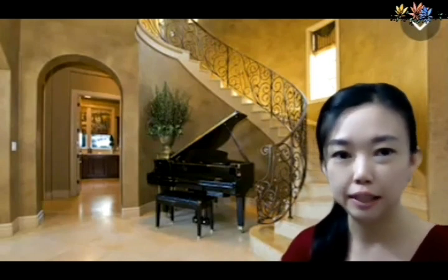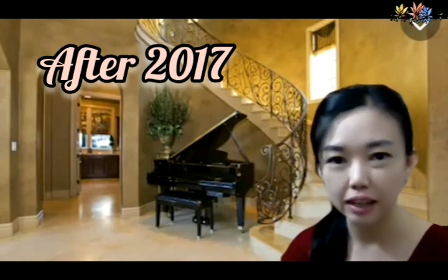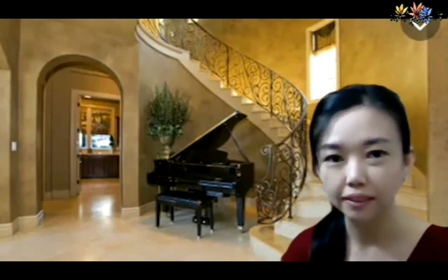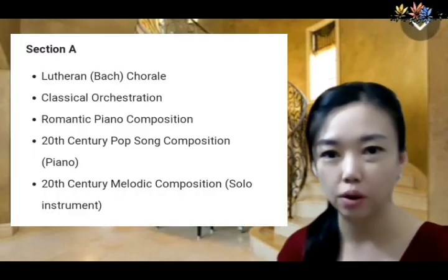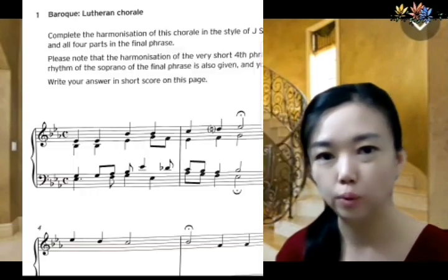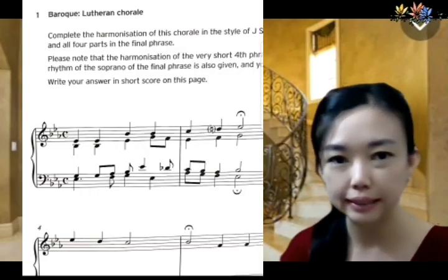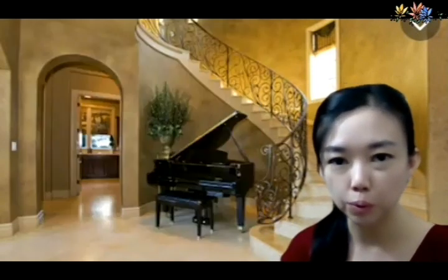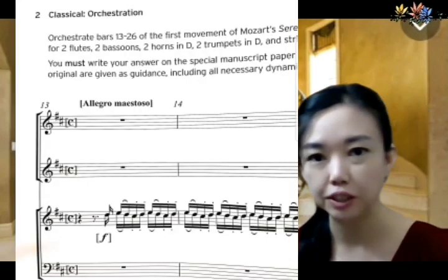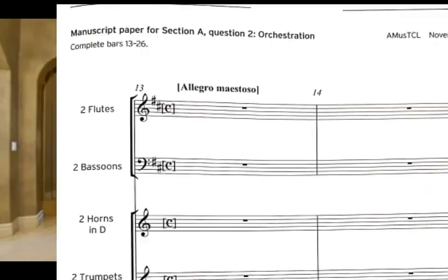There are two sections in the AMUST/TCL diploma music theory exam. Section A consists of: Question 1 — to harmonize a Baroque chorale, involving four-part writing to add alto, tenor, and bass parts. Question 2 — orchestration, where they give you a reduction score and your job is to assign the melody and harmony to different parts of the orchestra and write it down on a blank orchestral score. They will also guide you on which instruments to use.